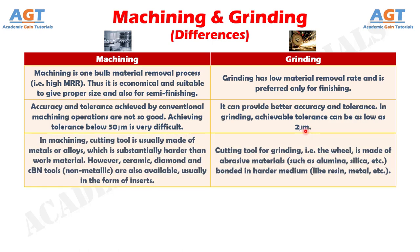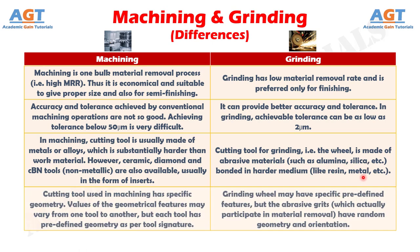Number 3: in machining, the cutting tool is usually made of metals or alloys which are substantially harder than the work material. However, ceramic, diamond and cubic boron nitride tools — non-metallic — are also available, usually in the form of inserts. Whereas the cutting tool for grinding, that is the wheel, is made of abrasive materials such as alumina and silica, bonded in a harder medium like resin and metal.